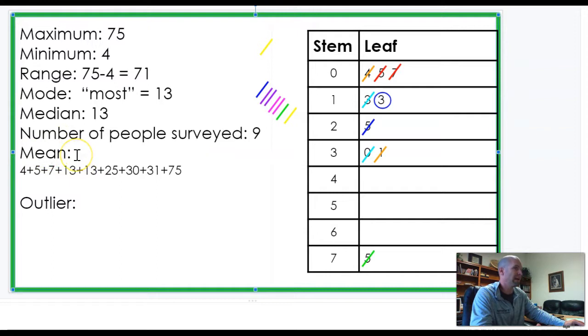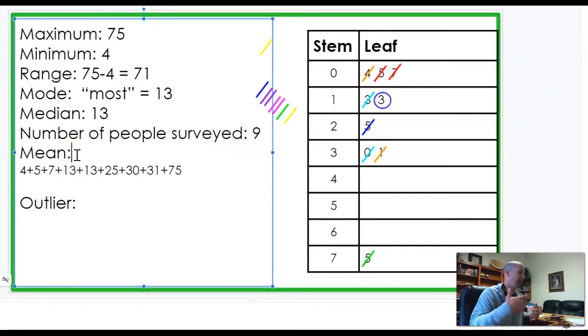All right. So, the mean, that is what sometimes just, if people just say the average, often they are talking about the mean. Often, they mean the mean. And so, this is a little review, but you've got to add up all the sum of all the numbers. So, you'd have to add all those up. Let's see. So, four and five is nine. Nine and seven is sixteen. Sixteen and thirteen is twenty-nine. We'll see if I can do this in my head. Twenty-nine and thirteen is thirty-nine forty-two. Forty-two and twenty-five is fifty-two, sixty-two, sixty-seven.